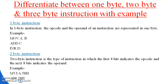Next, let's differentiate between 1-byte, 2-byte, and 3-byte instructions with examples. A 1-byte instruction is one in which the opcode and the operand of the instruction are both represented in 1 byte. For example: MOV A, B; RAR; or INR B — these are all 1-byte instructions.